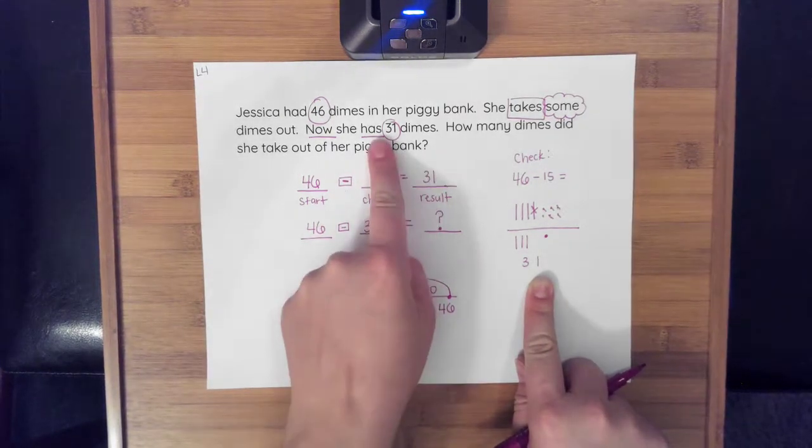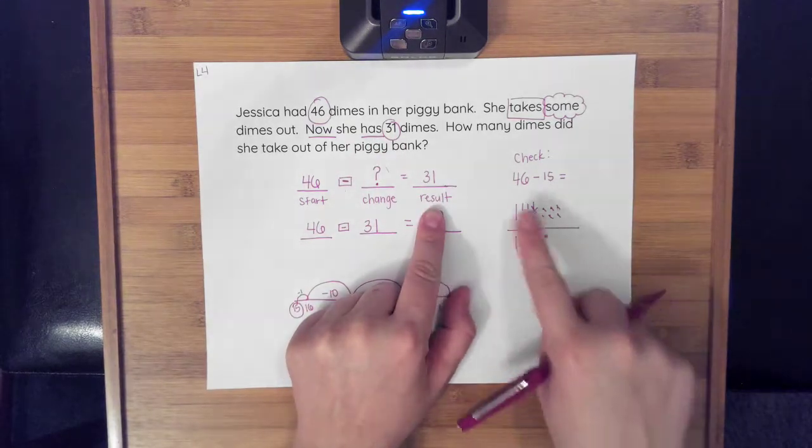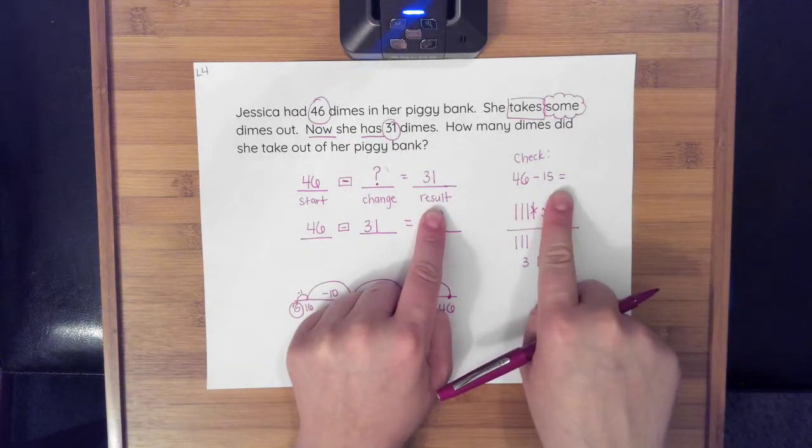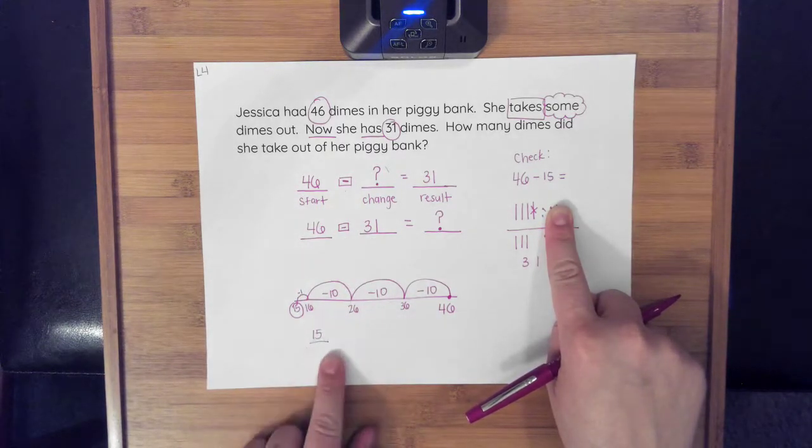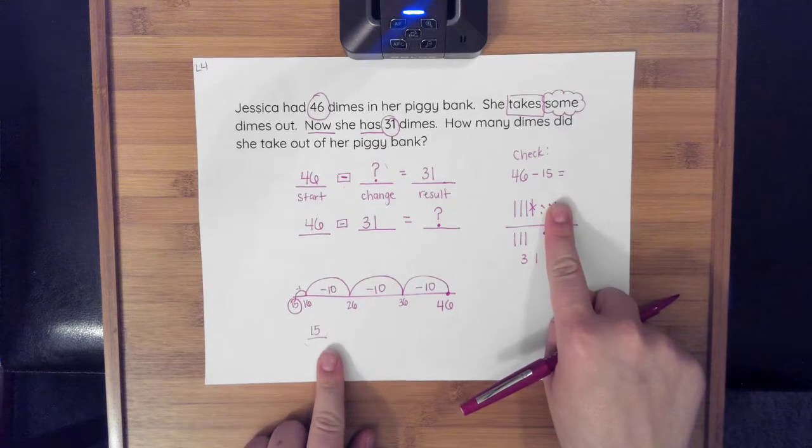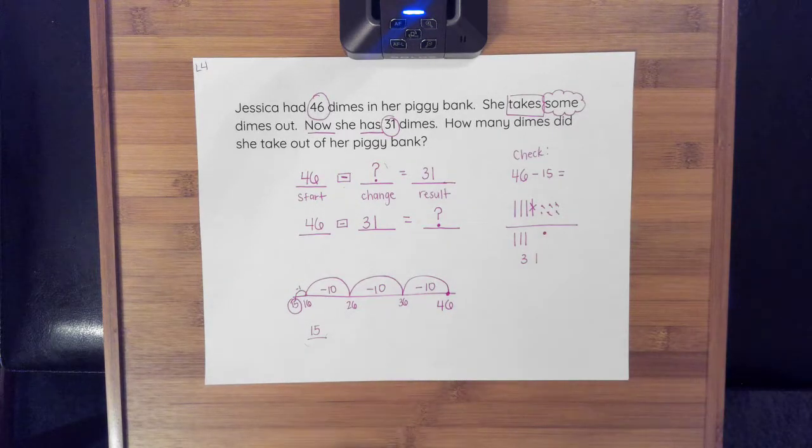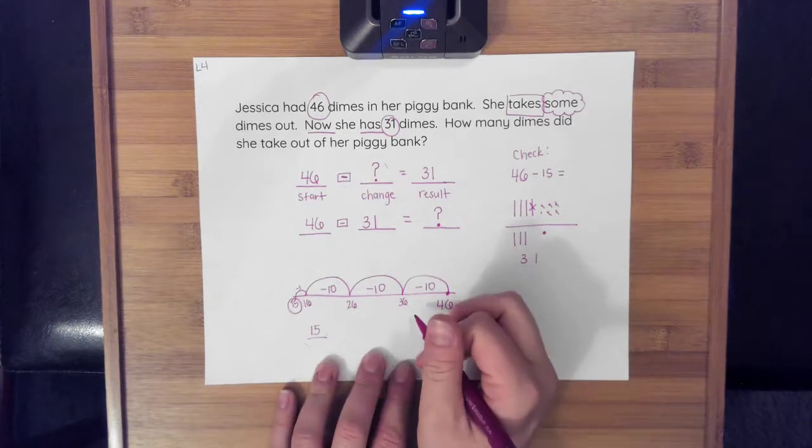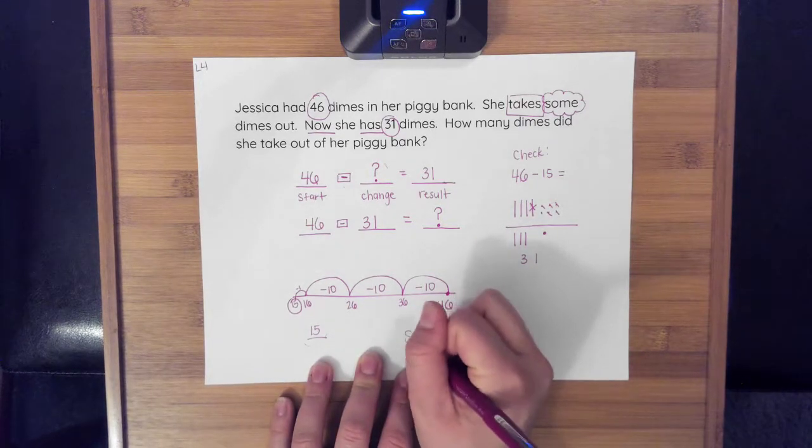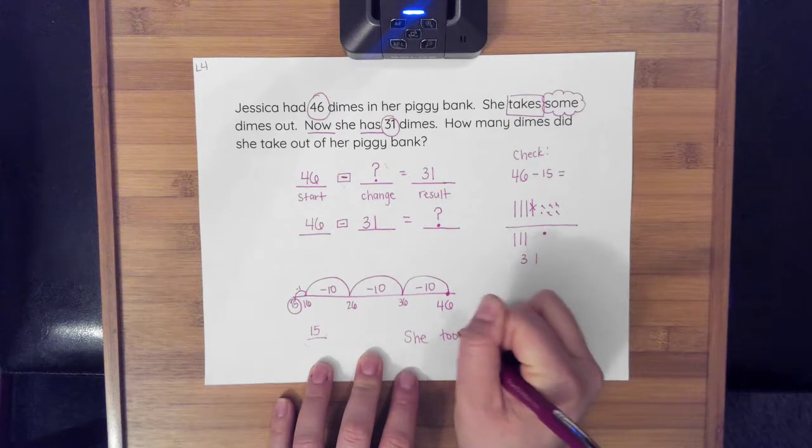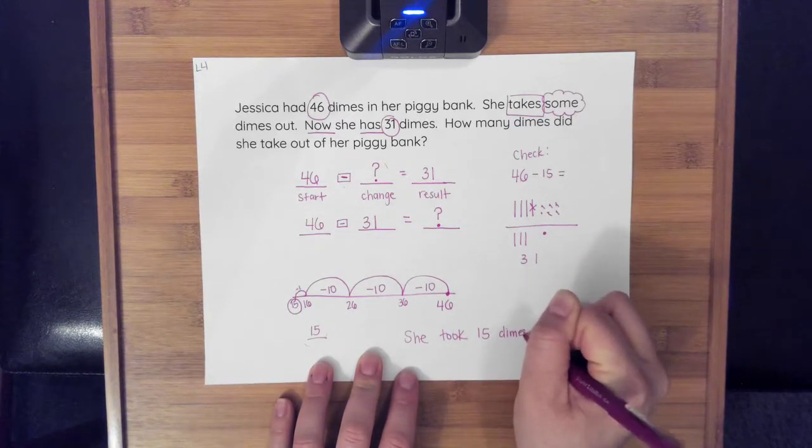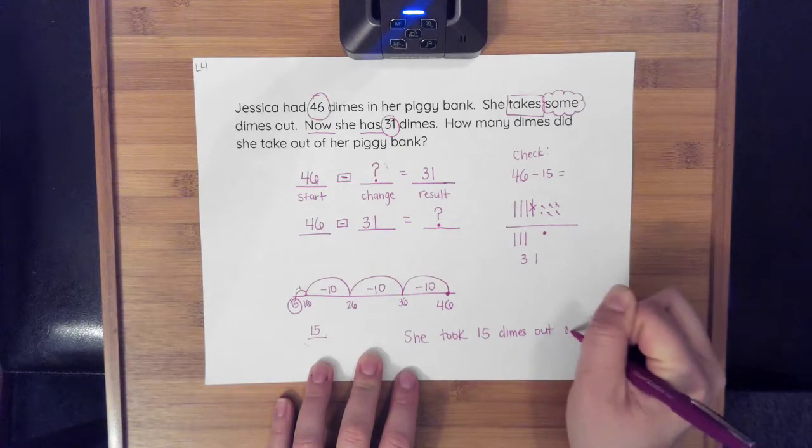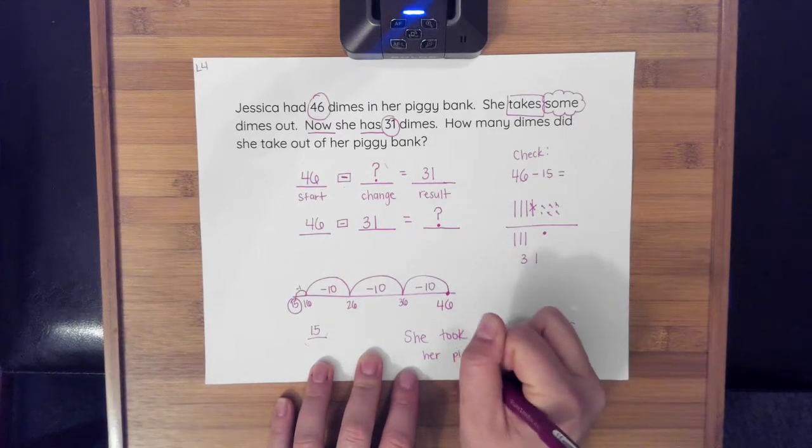So I now am going to write my solution sentence since I know that she took out 15 dimes. I'm going to say she took 15 dimes out of her piggy bank.